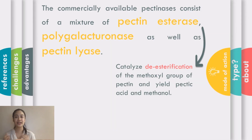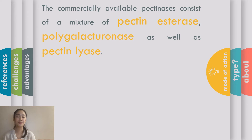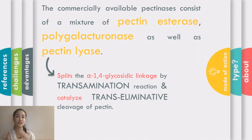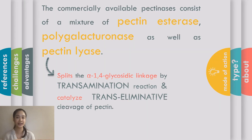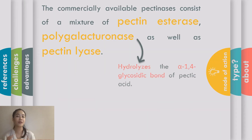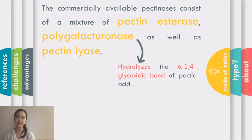Pectin esterase catalyzes the esterification of the methoxyl group of pectin, yielding pectic acid and methanol. Pectin lyase splits alpha-1,4 glycosidic bonds by transelimination and catalyzes trans-eliminative cleavage of pectin. Polygalacturonase cleaves alpha-1,4 glycosidic bonds of the pectic acid.